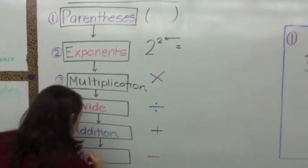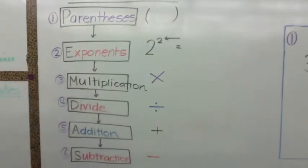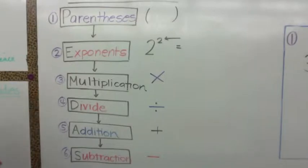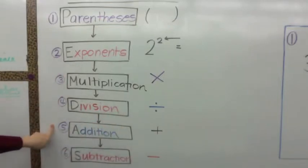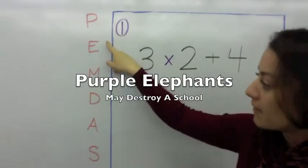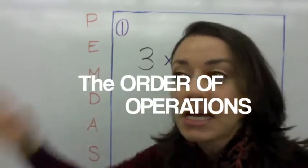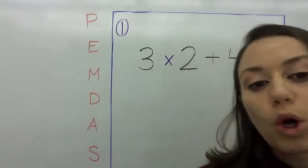Subtraction. So make sure you have the steps: parentheses, exponents, multiplication, division, addition, and subtraction. Those are the order you're going to go in, from left to right. Remember: purple elephants may destroy a school. This is known as PEMDAS — the order of operations. Today we're going to focus on three numbers.